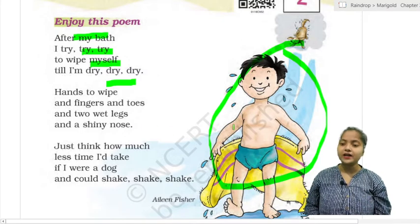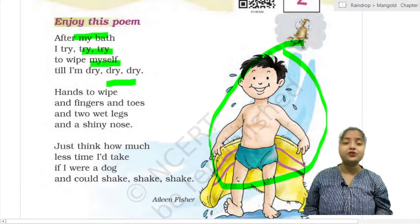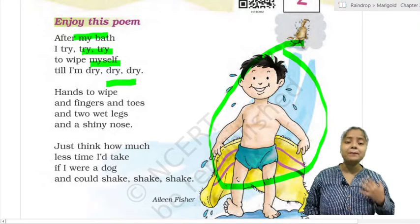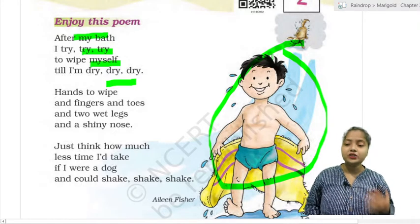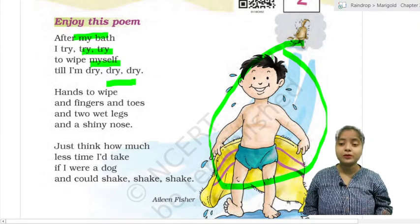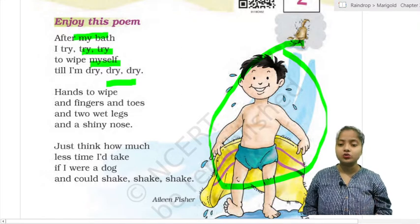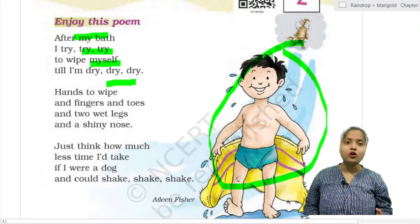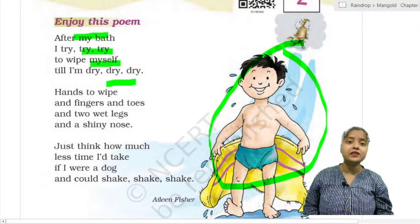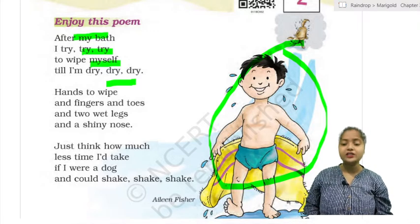So here is a child. This child is talking to you. People are telling me to try, try, try. Try means try to wipe myself. Wipe means to dry yourself, the hair. Dry, dry, dry. Hands to wipe and fingers and toes, finger and toes, and two wet legs, two wet legs, and a shiny nose.